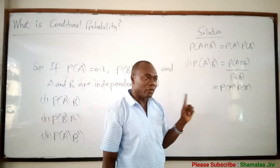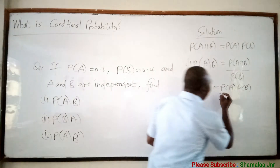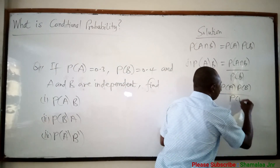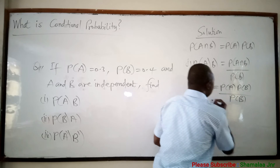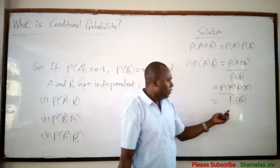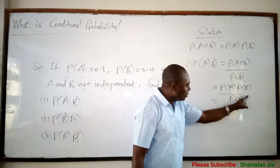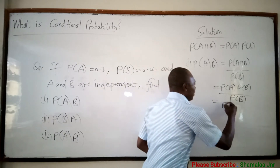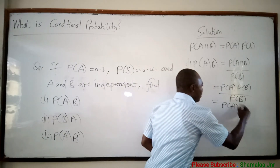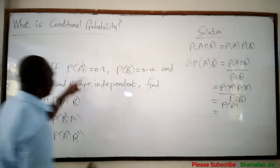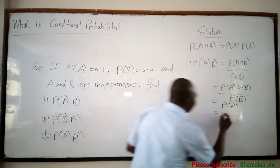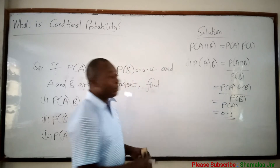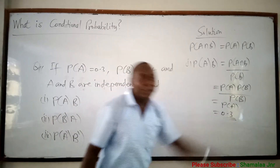You have to take note of all this. P of B cancels P of B, all over P of B. So you are going to have P of A, and P of A has been given to us to be 0.3. So the probability of A given B is 0.3.